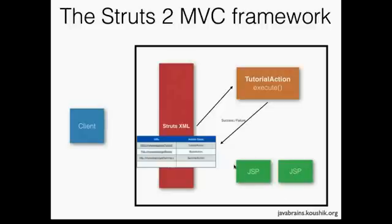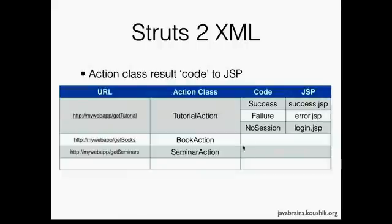This is the solution to the problem. We do not have to mention the JSPs in the execute method. The execute method just returns a particular code, and based on that code, the right JSP — which is configured in the XML — is used for rendering the results. You have a URL mapped to an action as usual, and each action will have a particular code upon which a particular JSP gets executed.